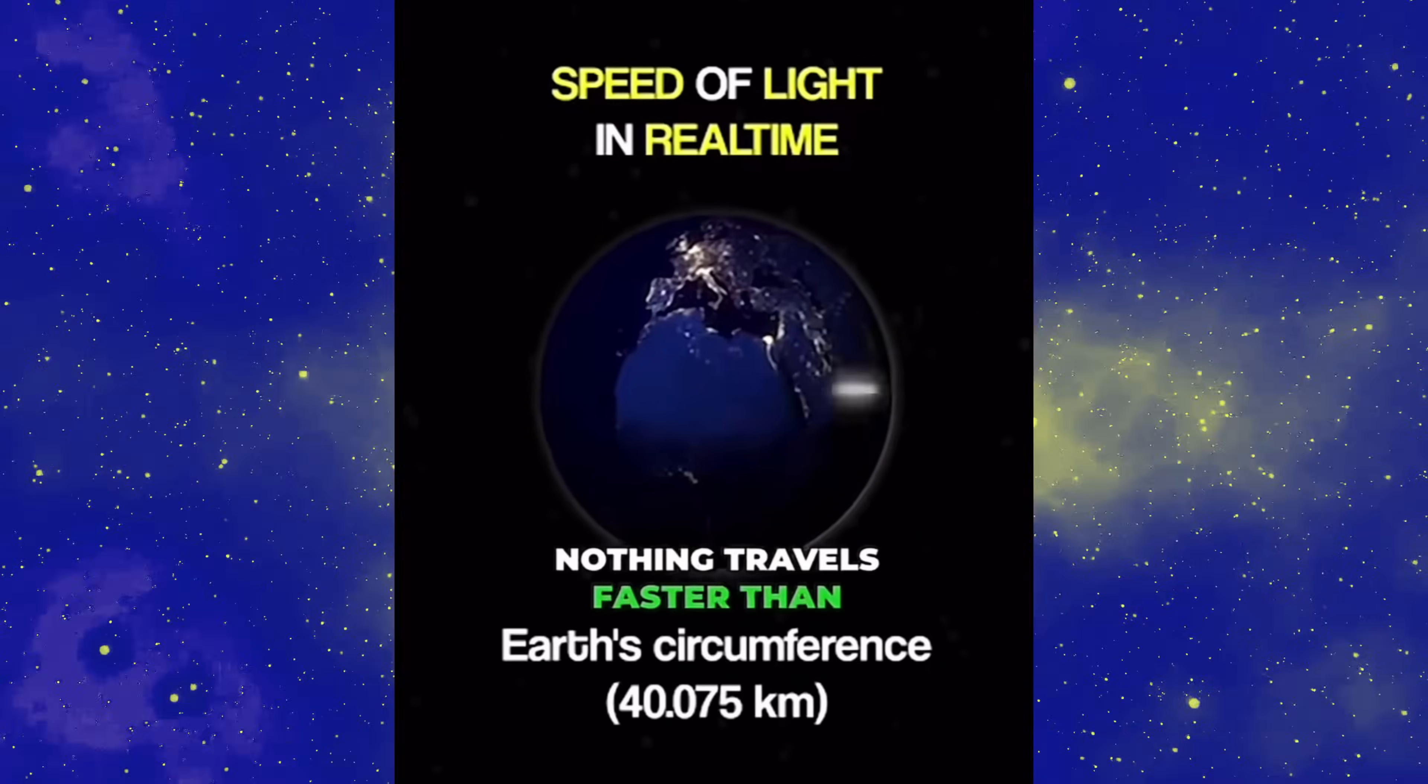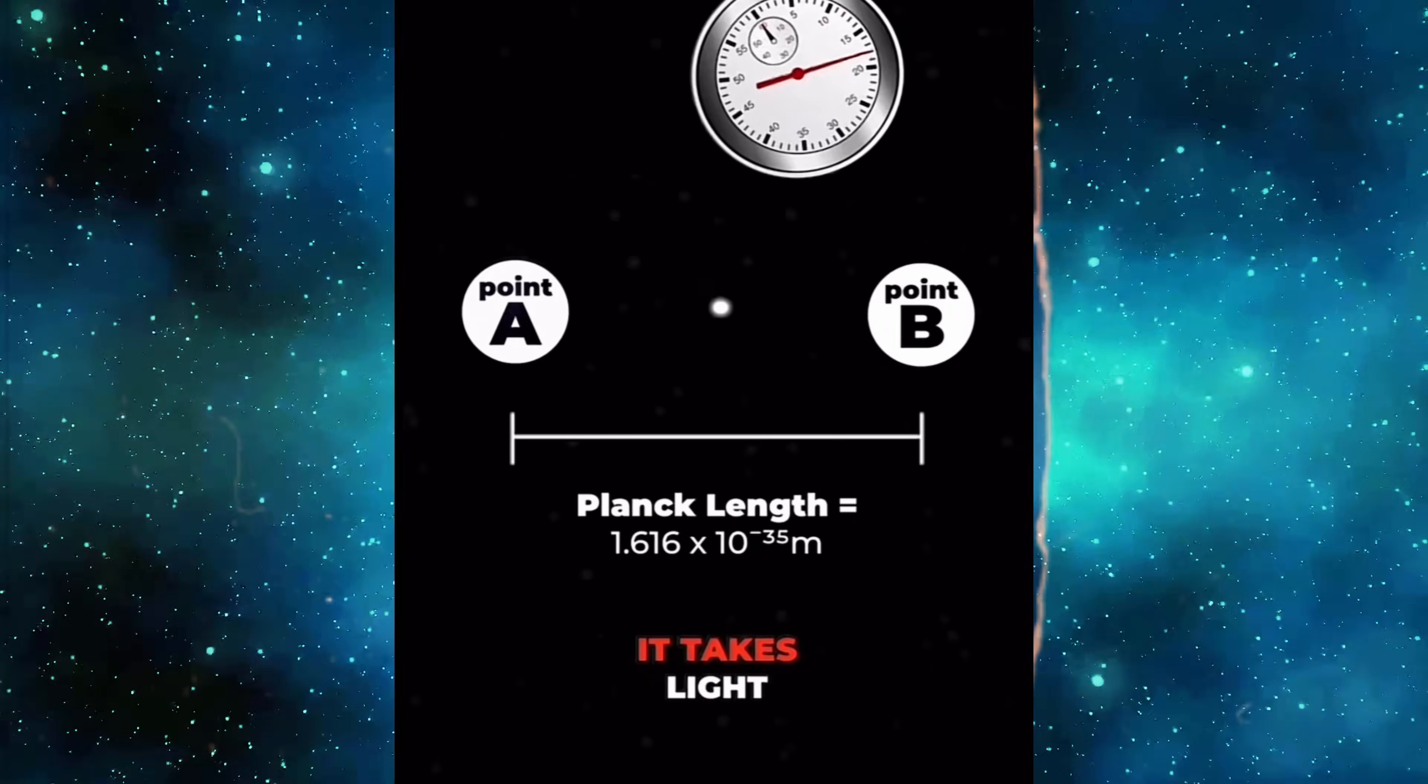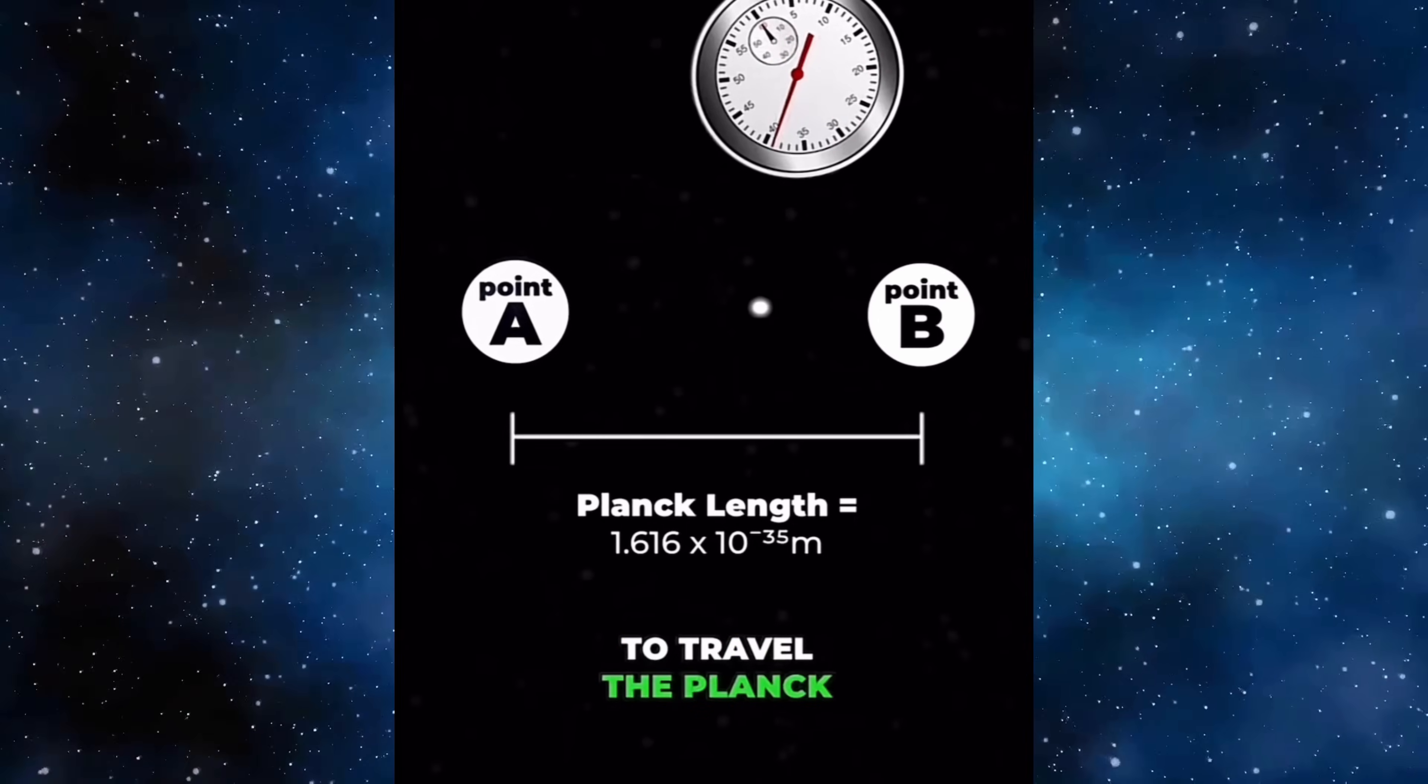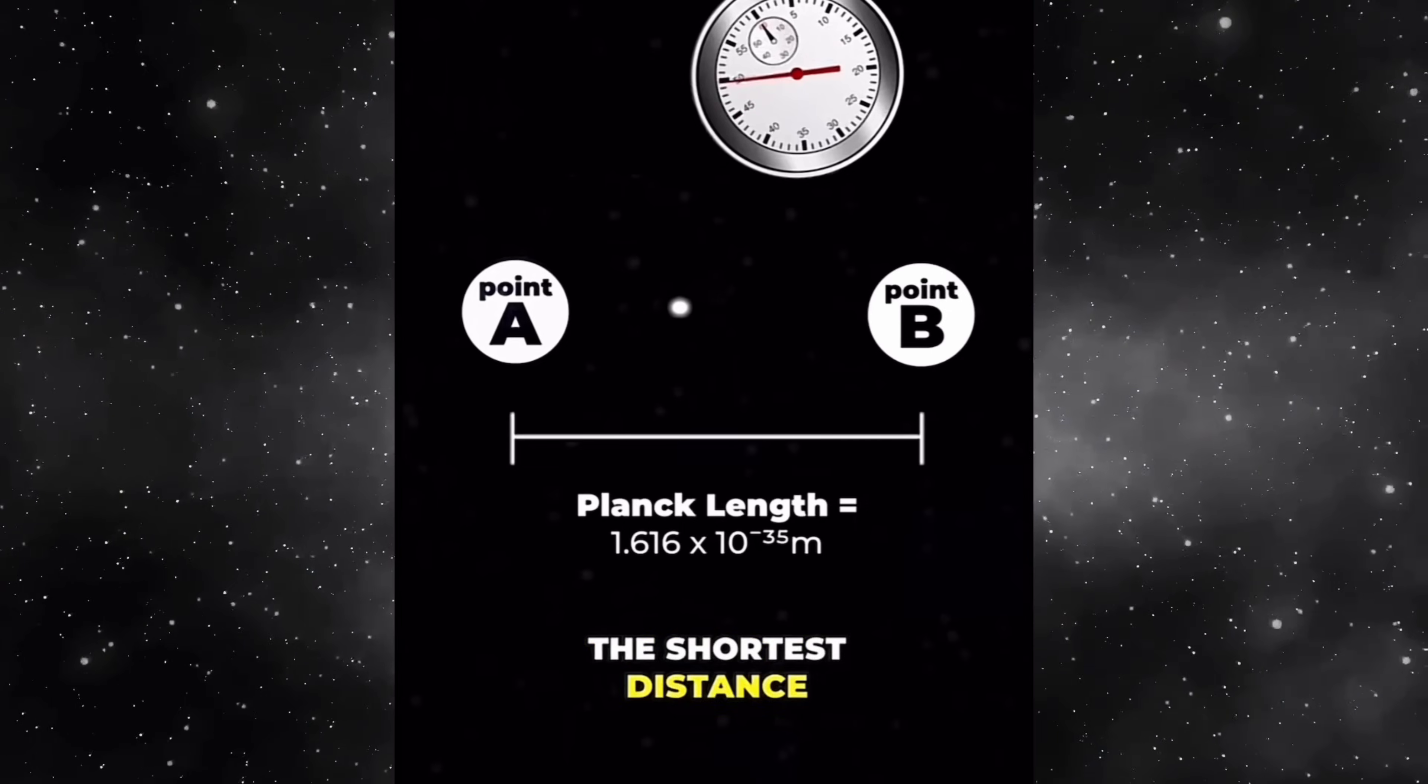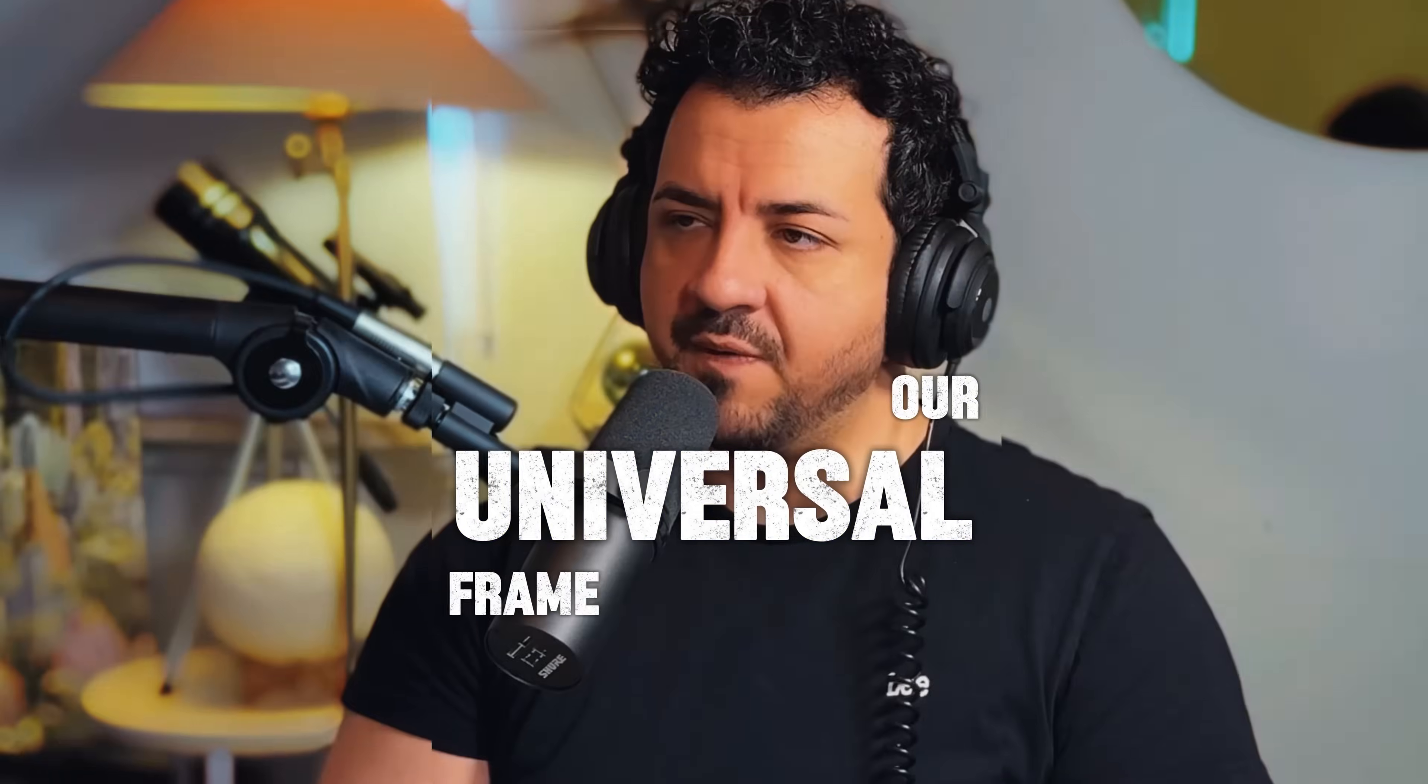Remember, nothing travels faster than light. So, if we measure the amount of time it takes light, the fastest speed, to travel the Planck length, the shortest distance, we get the Planck second. This is our universal frame rate.